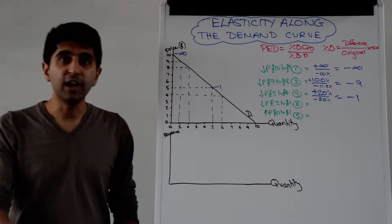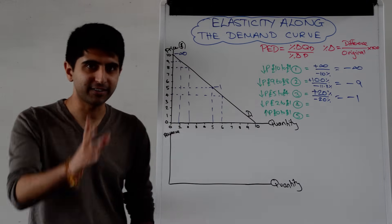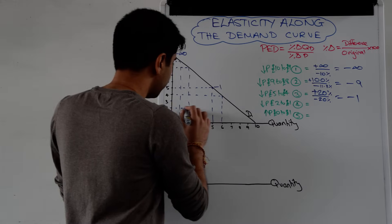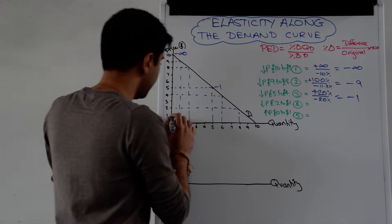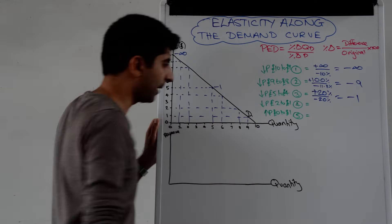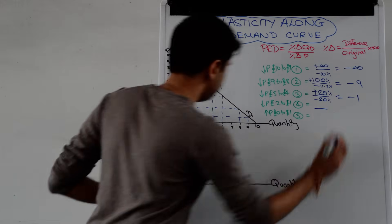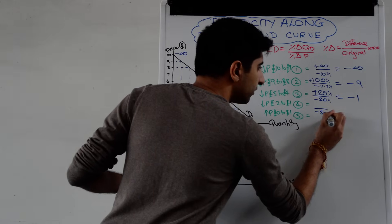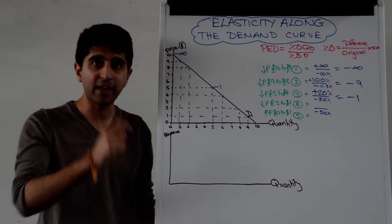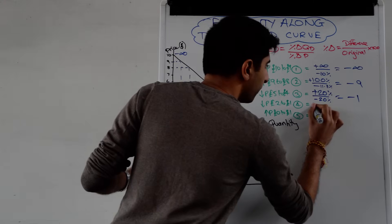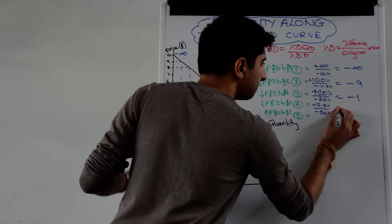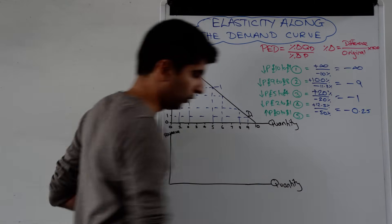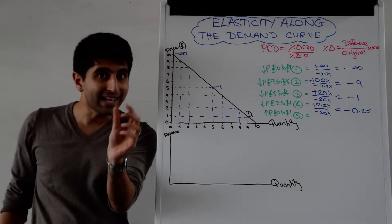The bottom half of the demand curve is always going to be the inelastic portion. Let's understand why by looking at these equations. Take a price reduction from £2 to £1. At £2, the quantity demanded is 8, and at £1, it's 9. The price reduction from 2 to 1 is 1 over 2 times 100 — a 50% reduction in price. The increase in quantity demanded from 8 to 9 is 1 over 8 times 100, a 12.5% increase. That gives an elasticity figure of minus 0.25 — inelastic demand.